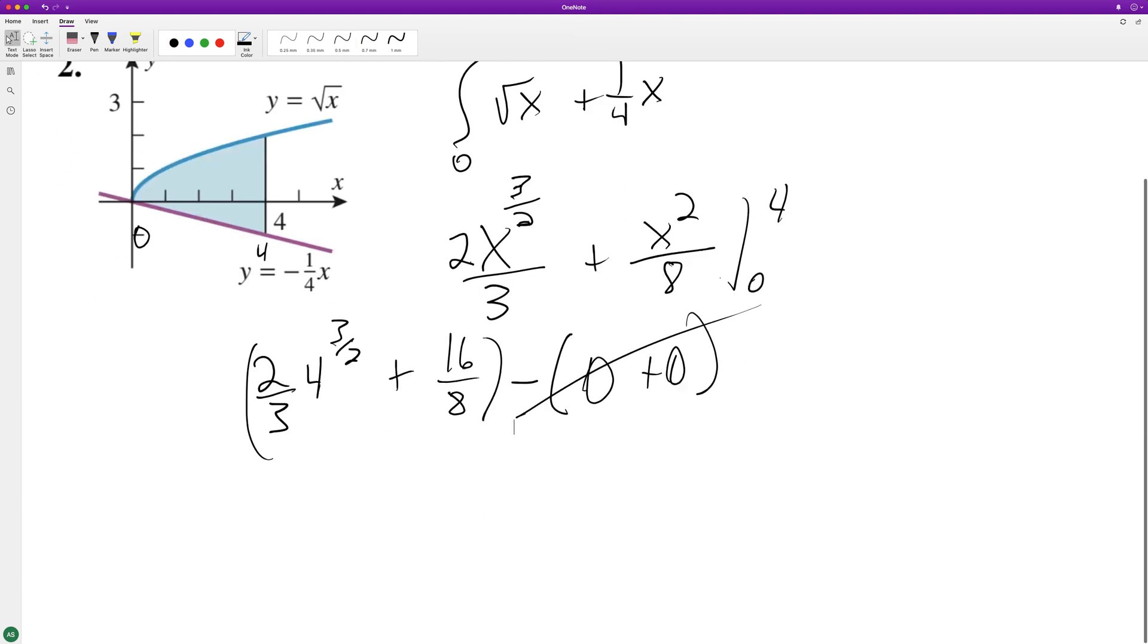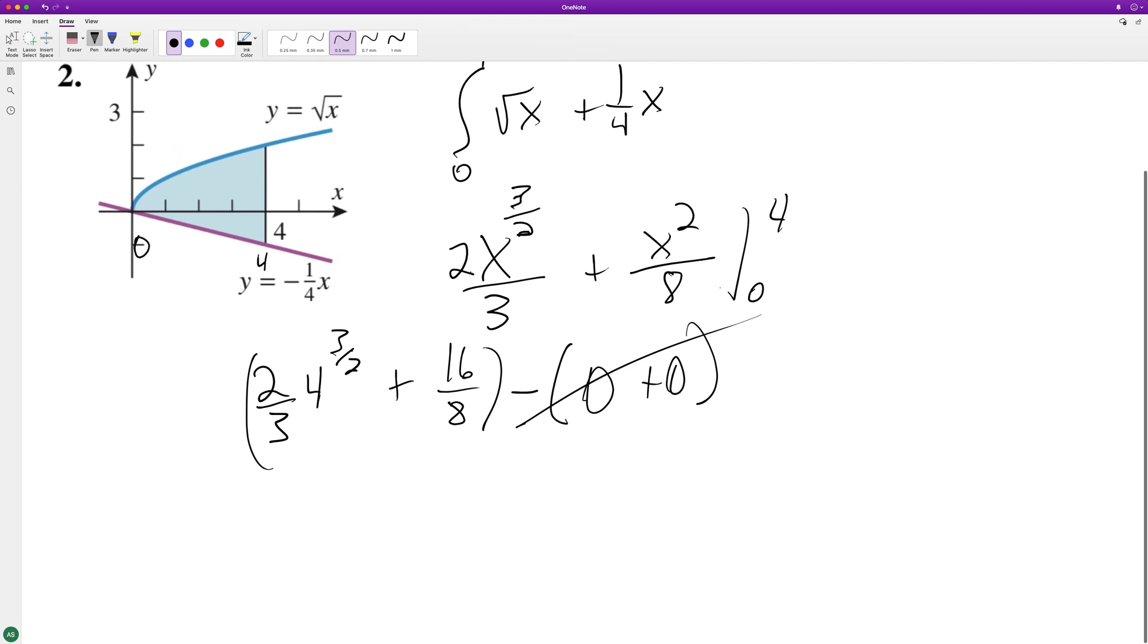All right, so square that, cube - so eight times two over three, sixteen over three, plus two. So that's adding six to that, so it becomes twenty-two over three, because that's the same thing as six over three.